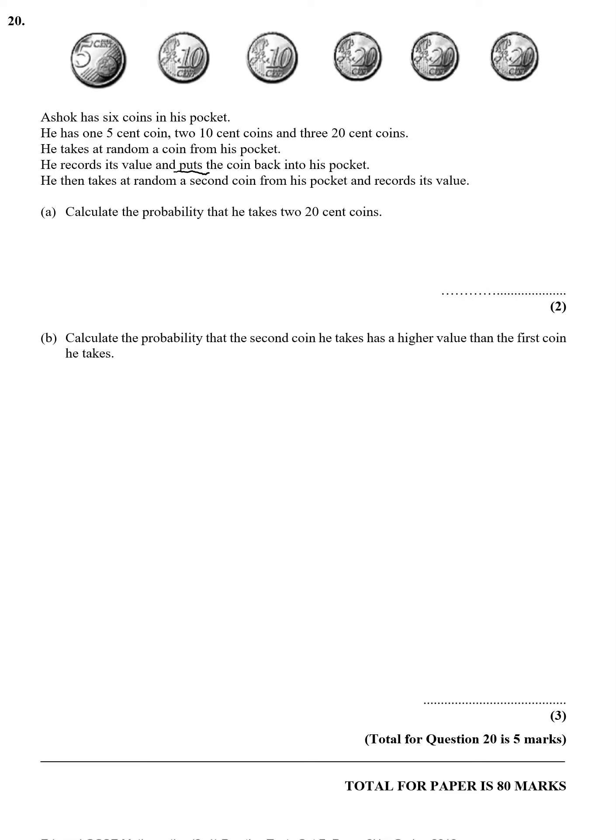Well, the probability he takes one is 3 over 6. He puts it back, so actually the second probability doesn't change, which gives us 9 over 36, or a quarter. Well, that's quite easy for the last question, wasn't it?